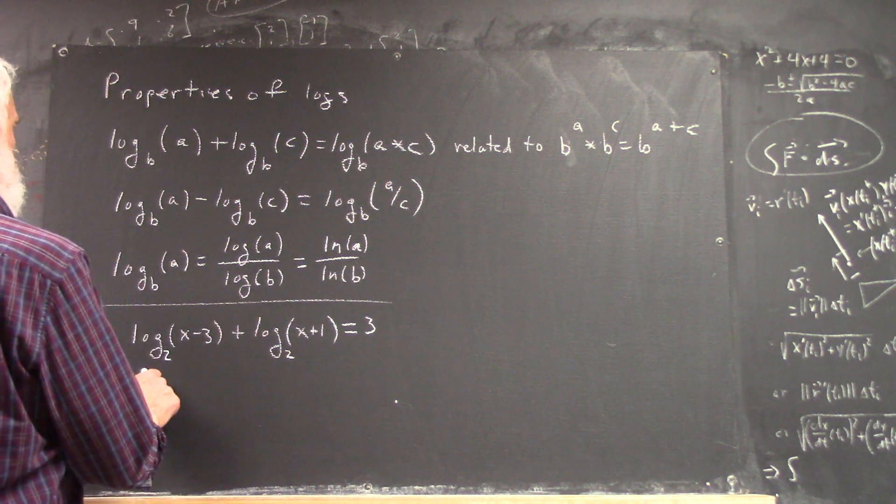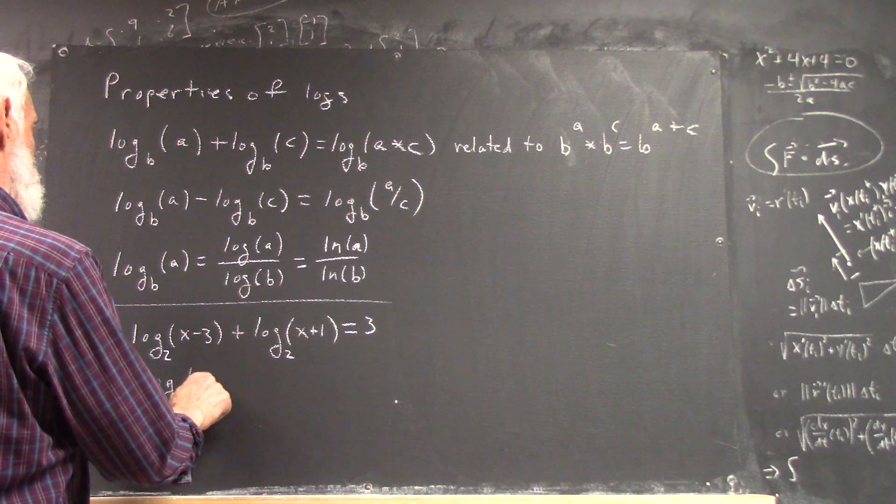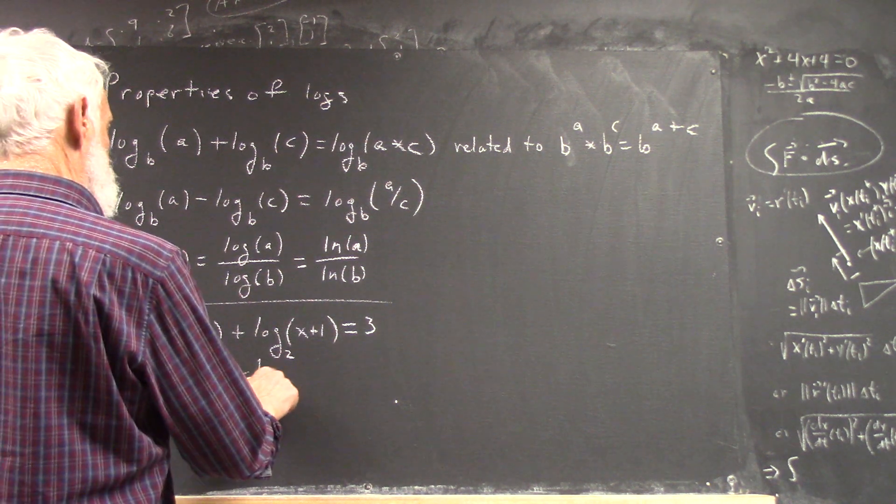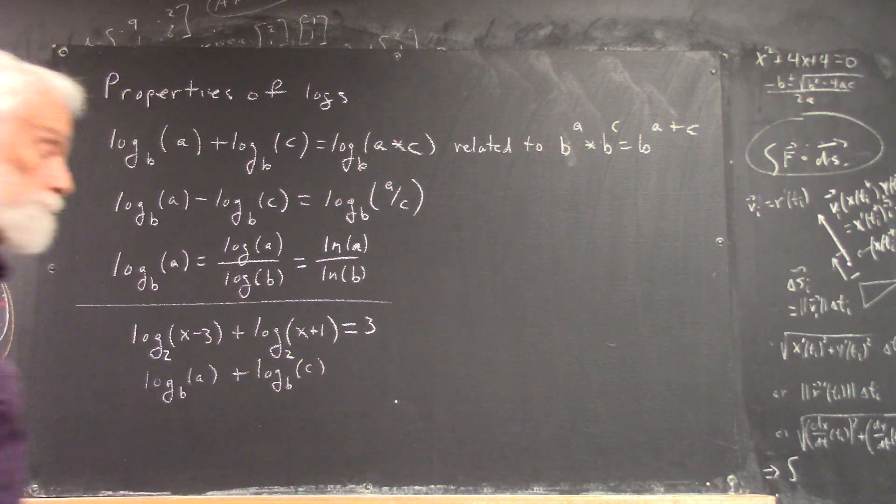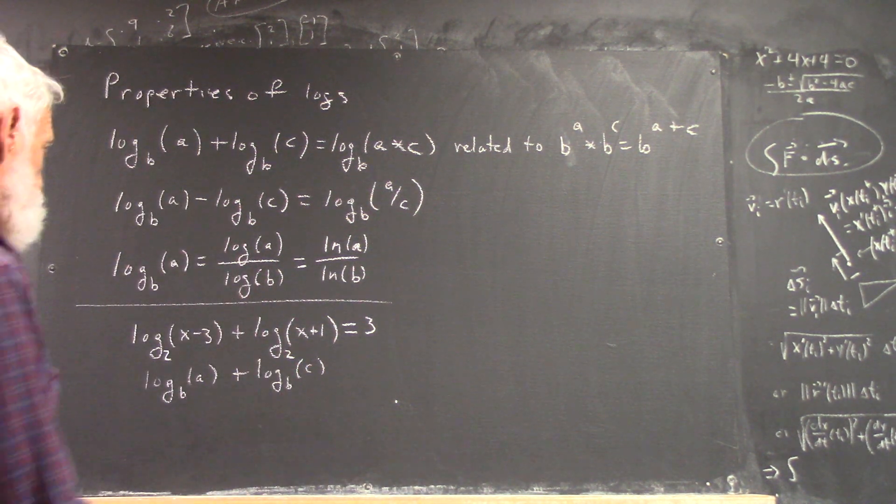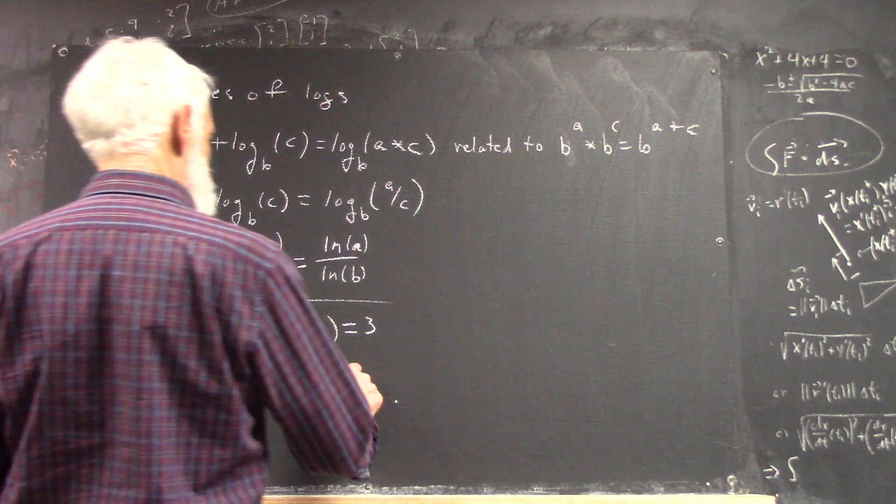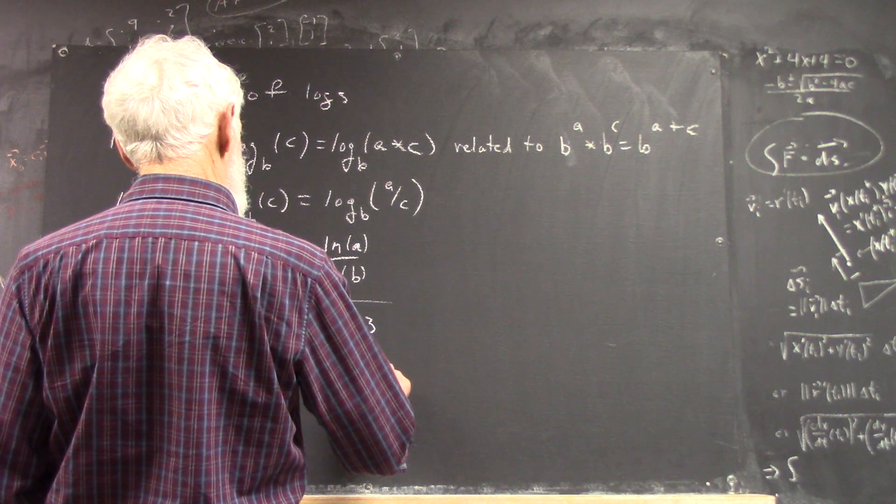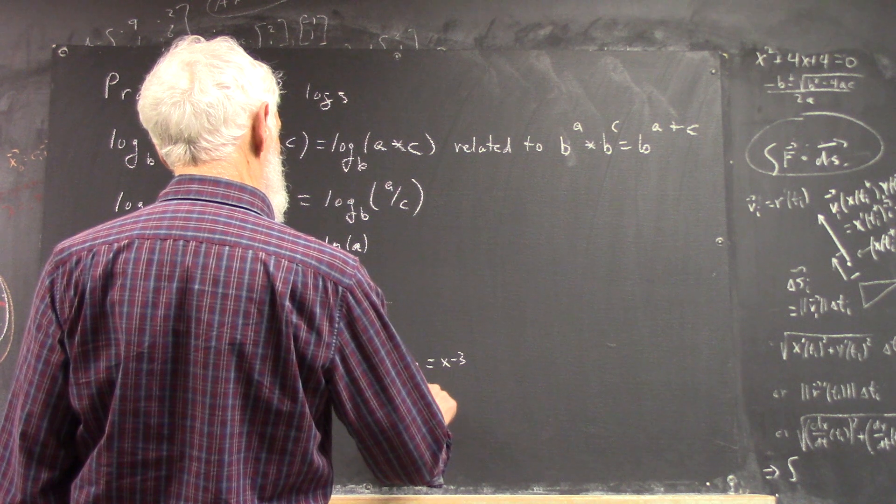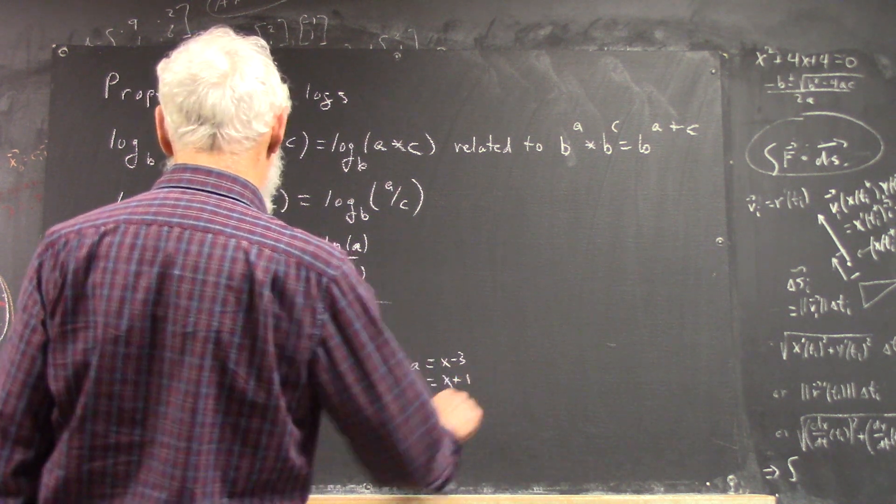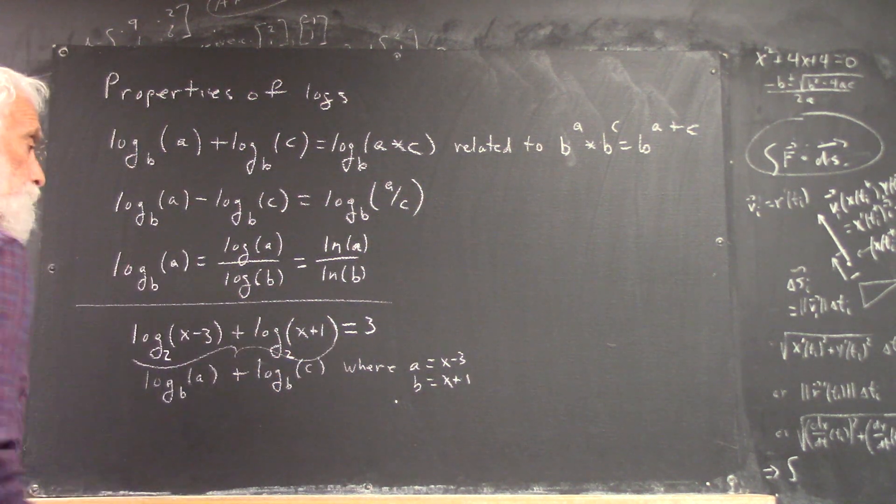So this is like log to the base B of A plus log to the base B of C. Where A is X minus 3 and B is X plus 1. Okay, so this here is of that form.